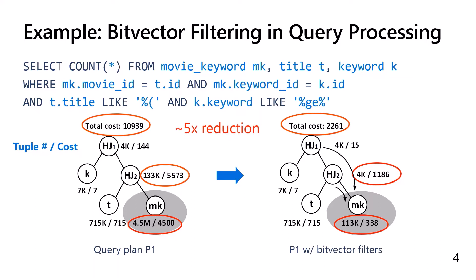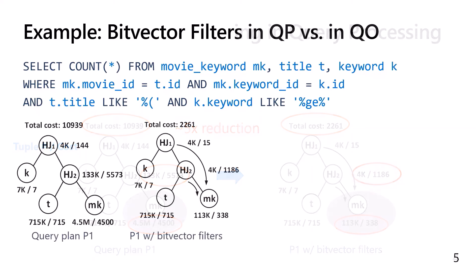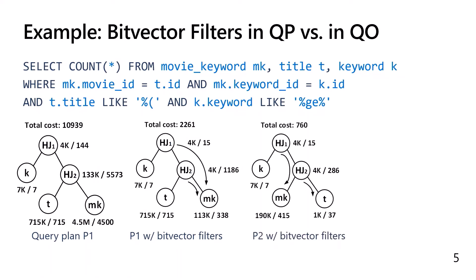The bitvector filtering seems to be quite effective in reducing query execution cost. But can we get even more out of it? If we look at the query again, there actually exists another plan P2 with even lower cost. Instead of just 5x cost reduction, we can get 15 times cost reduction with bitvector filters.